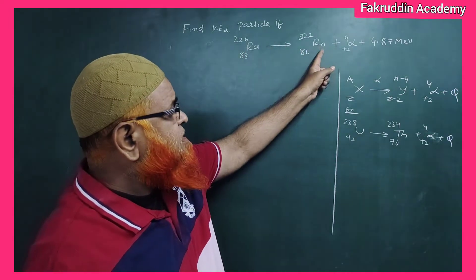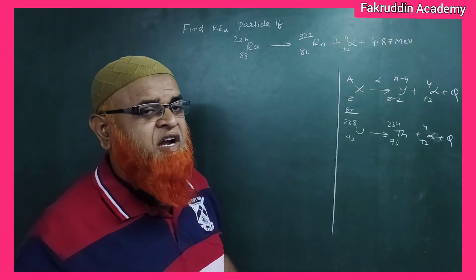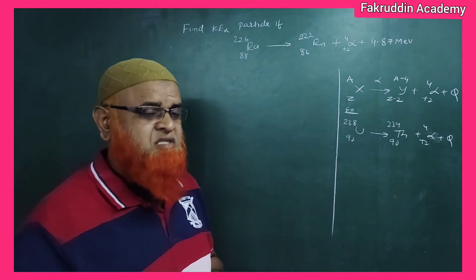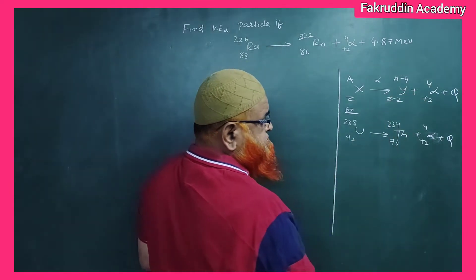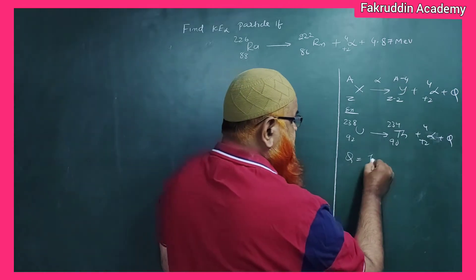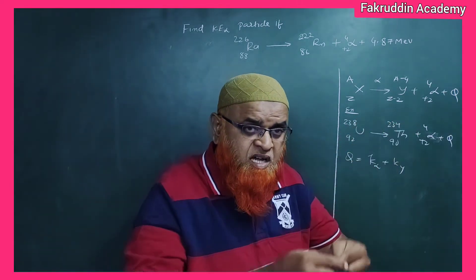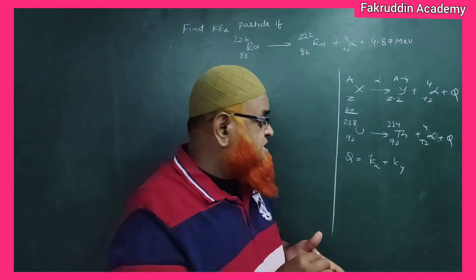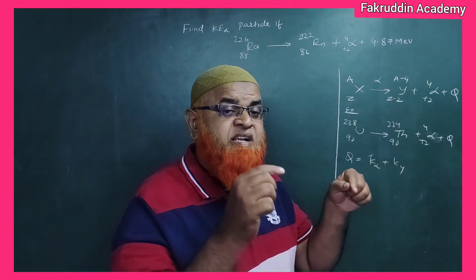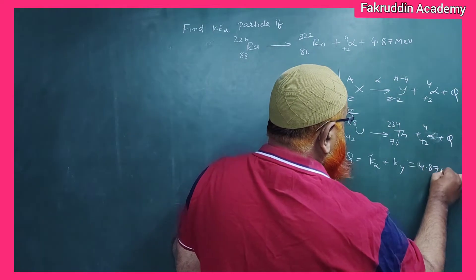In this reaction, 4.87 million electron volts of energy is released, and we are asked to find out the kinetic energy of the alpha particle. The key concept is that the heat energy released in the process is due to the kinetic energy of the alpha particle and the kinetic energy of the daughter nuclei combined. That total equals Q = 4.87 million electron volts.